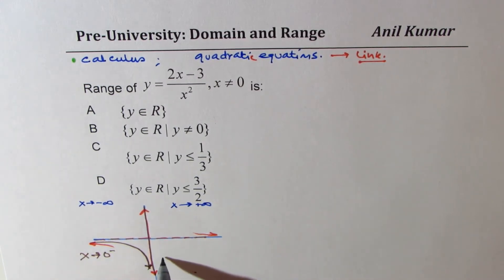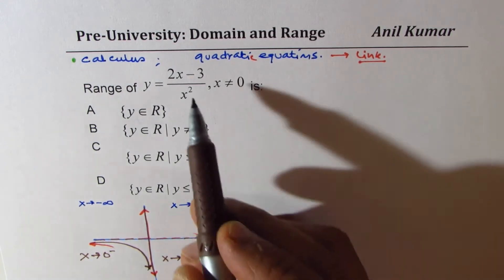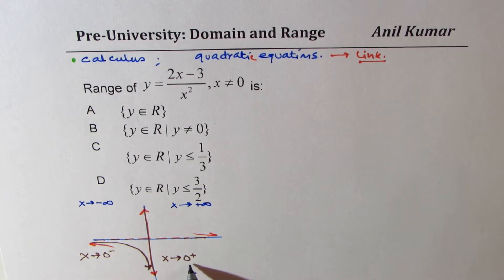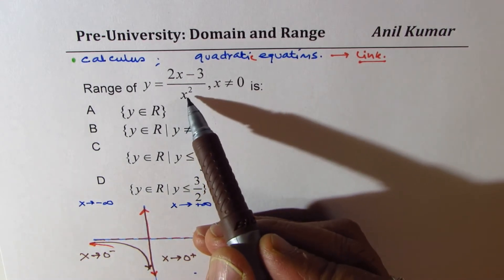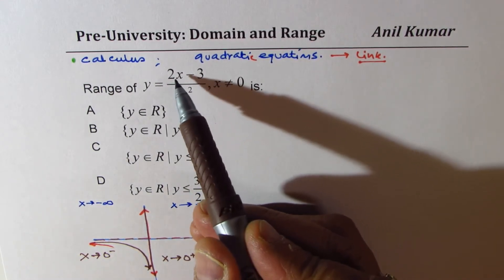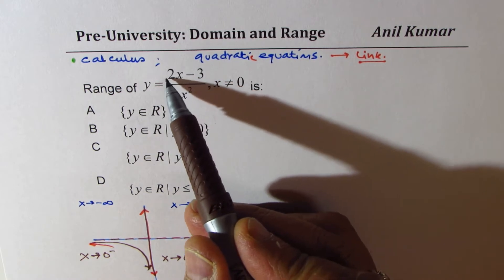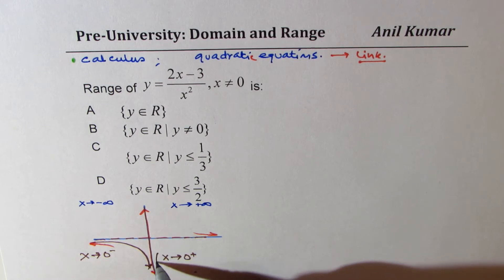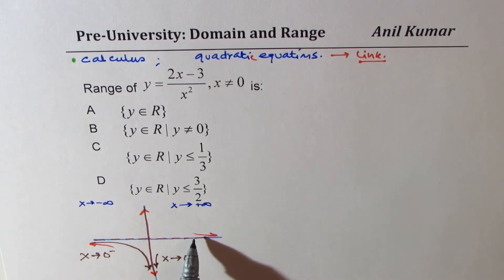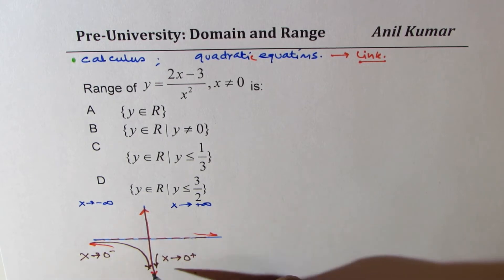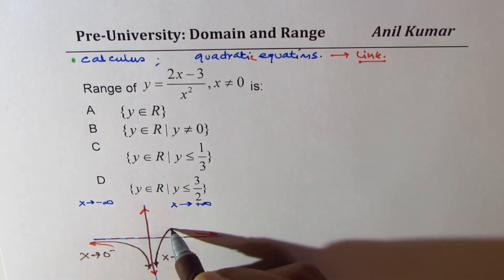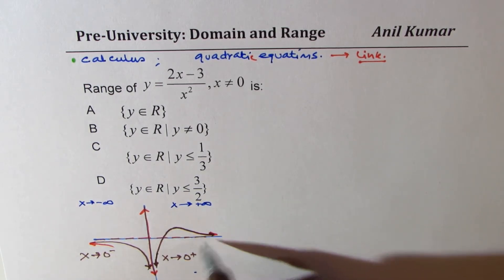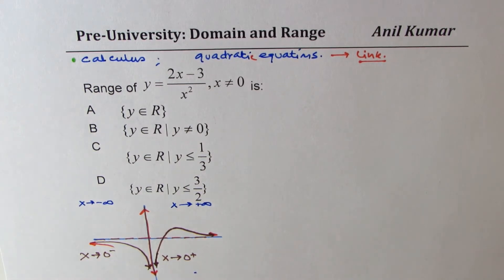But if x is approaching 0 from the positive side, small value, in that case, denominator is positive, however, numerator is negative. It is 2 times a small value minus 3. So it is again negative. So it is again approaching. Since we are approaching from the positive side, that indicates that the graph should be kind of like this. Do you get an idea?